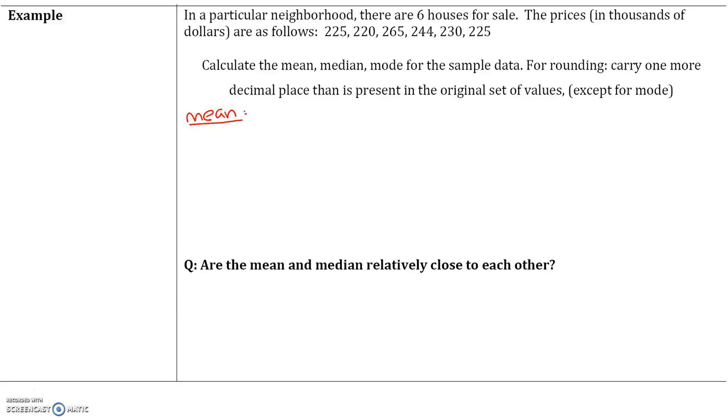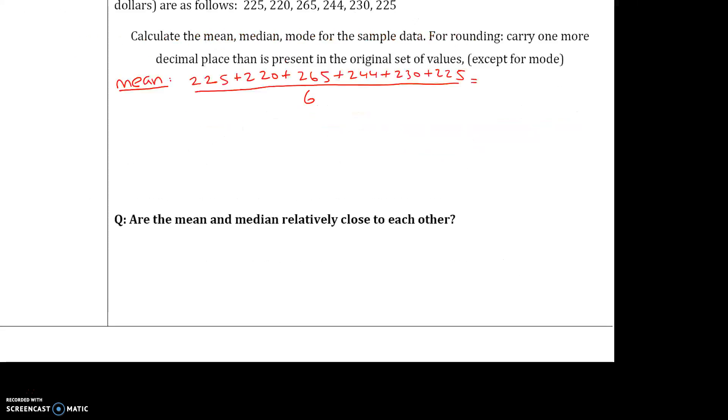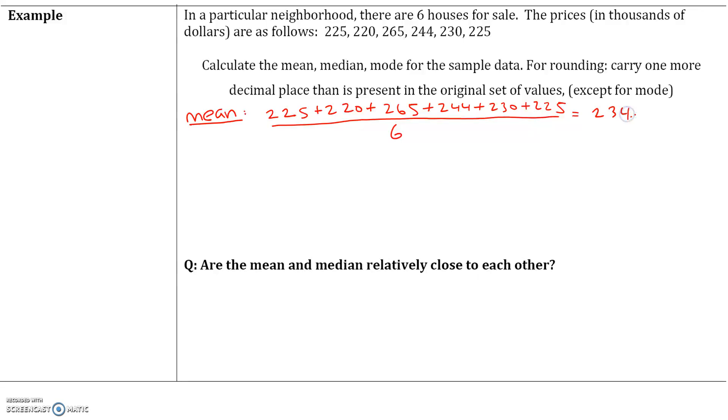Recall that the mean is the sum of each data value divided by the number of data values. So we have 1, 2, 3, 4, 5, 6 data values. Let's add those all up: 225 plus 220 plus 265 plus 244 plus 230 plus 225, and divide it by 6. If we add all these up and divide by 6, our mean is 234.8 in thousands of dollars.